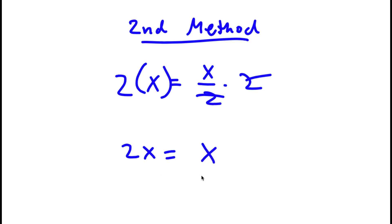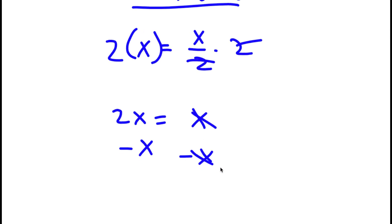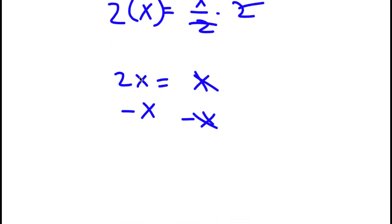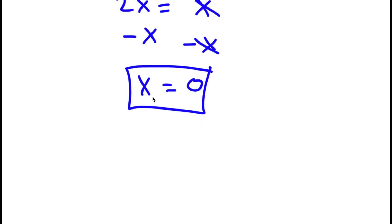Now, I'm going to subtract x on both sides. These two cancel out, and I'll be left with 2x minus x, which is x, is equal to 0.